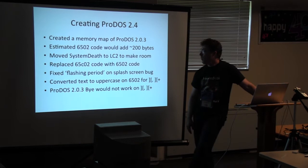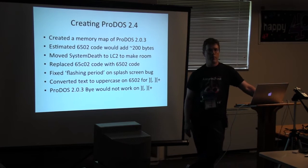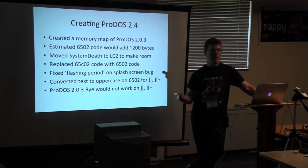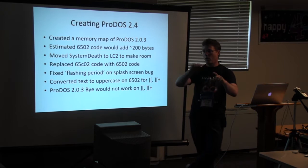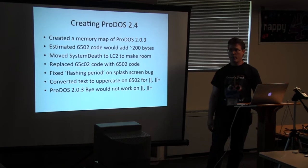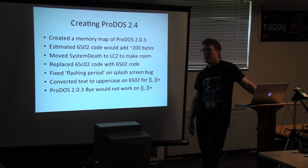I took the system death function, which almost no one has ever seen — it only happens if there's a bug in ProDOS or an interrupt with no interrupt handler. A little box comes up in the middle of your text screen saying 'system error.' But that's a bunch of code that almost never gets used yet is loaded every time you run anything. So I moved that out to Language Card Bank 2 so I could make ProDOS 65C02-compatible.